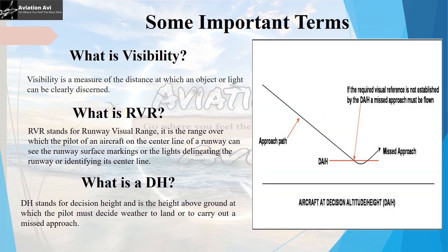This is DH, or decision height. It is the height above ground at which the pilot must decide whether to land or carry out a missed approach. So let us imagine an aircraft is coming in for landing along the approach path. There is a defined height based on the precision of the instruments or visual aids used, at which the pilot must have established a visual reference with the runway or must decide whether they are capable to land or need to carry out a missed approach. This particular height above ground is called the decision height.